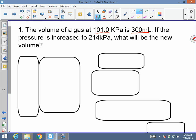If the pressure is increased to 214 kPa, now I see that this is pressure two, because it was increased to this, therefore this is pressure one. And this would be volume one. What would be the new volume? New volume, I'm looking for, which is volume two.